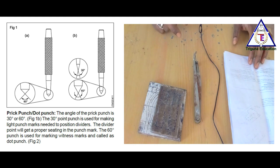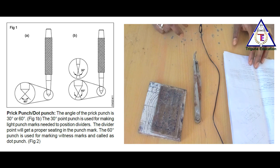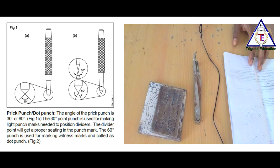The angle of the point is 90 degrees in a center punch. The punch mark is made by the center of the holes. The center punch is used for locating the center of holes.